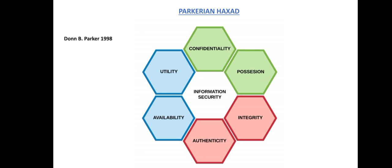The additional three elements are utility, possession, and authenticity. These six elements are non-overlapping and are not broken down further. Any violation or breach against information systems would be a violation of one of these six elements in the Parkerian Hexad.